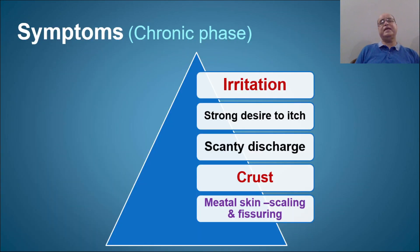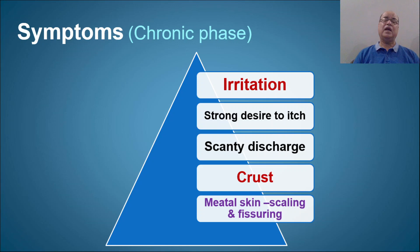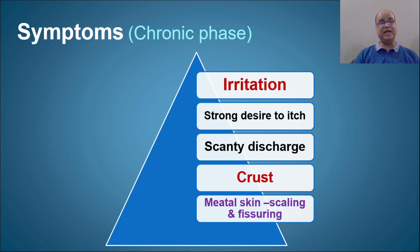In the chronic phase, the patient has irritation and a strong desire to scratch. Discharge, if present, is scanty. Due to dryness of the skin, the patient feels itching and there is crust formation. On examination, the meatal skin is scaly and fissuring, with scales and fissures due to dryness.